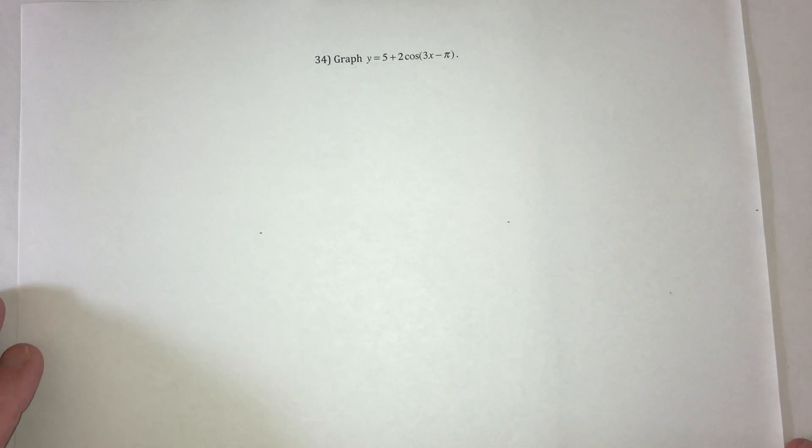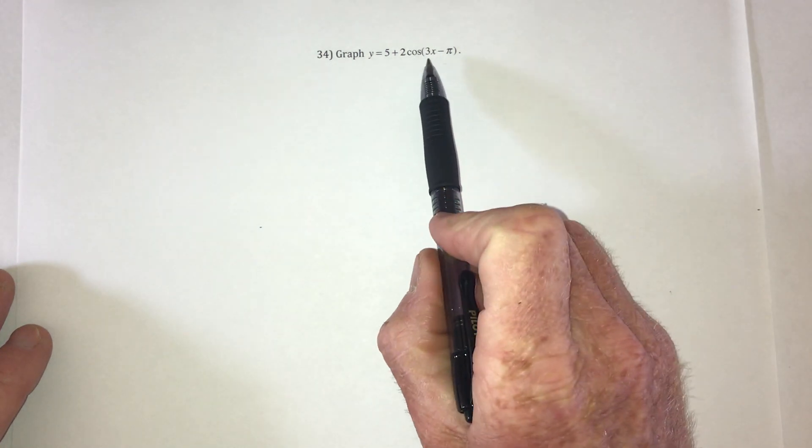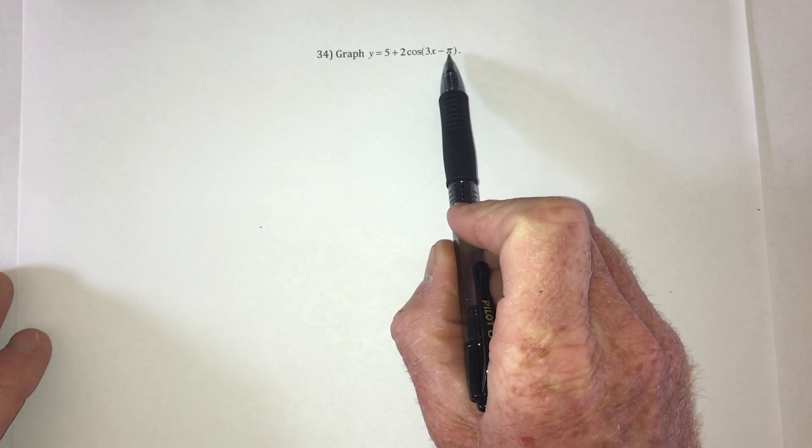Can you believe it? We're already to podcast number 34. Whenever it has this 3x minus π, the first thing you need to do is factor out 3.